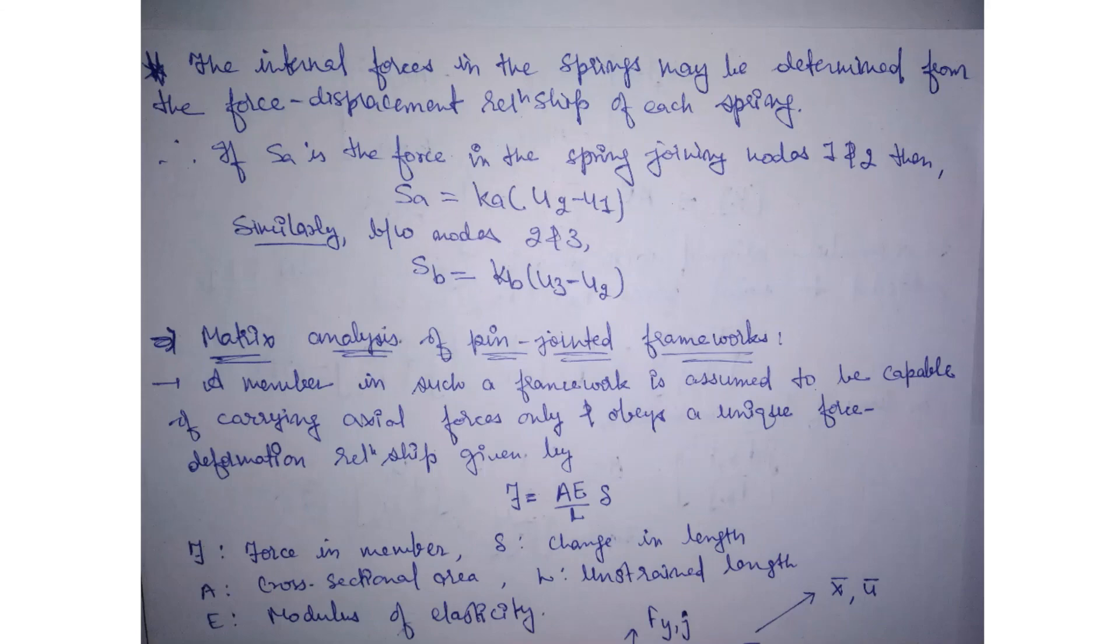The internal forces in the springs may be determined from the force-displacement relationship of each spring. If Sa is the force in the spring joining nodes 1 and 2, then Sa equals Ka multiplied by (U2 minus U1). Similarly, the internal force in the spring joining nodes 2 and 3, Sb equals Kb(U3 minus U2). For today we will stop here. In the next lecture we will see matrix analysis for pin-jointed frameworks. Thank you.